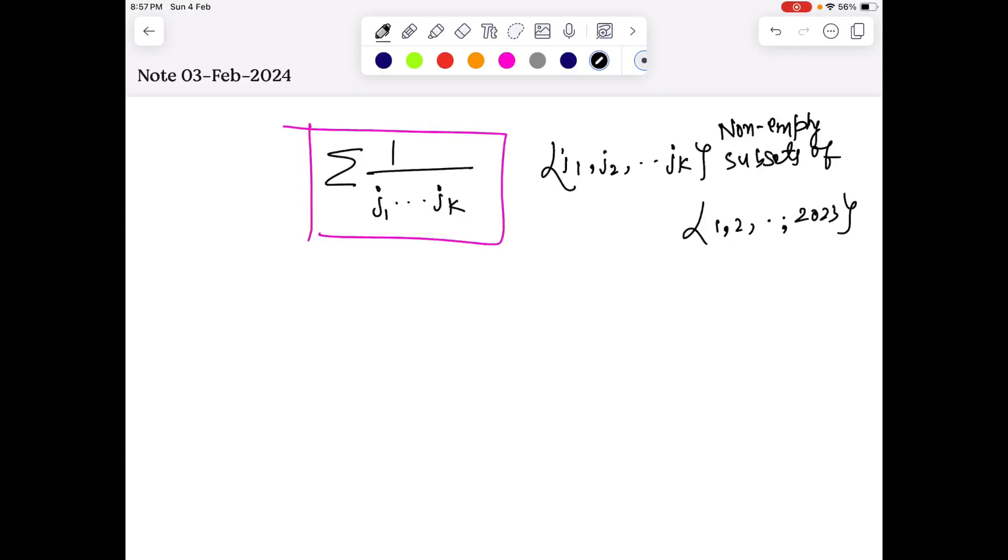Well, solving the thumbnail, we need to find sigma of 1 divided by j1·j2·...·jk product, where j1 to jk is non-empty subsets of 1 to 2023. So basically if we decode this problem, a non-empty subset of 1 to 2023 can be just {1}, or {1,2}, or we can have even {3,7}.